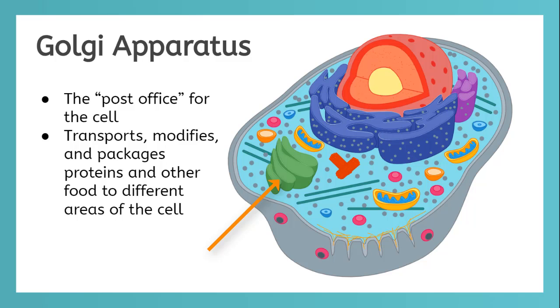The green blob is the Golgi apparatus. It is called the post office of the cell. It modifies, sorts, and packages different materials to leave the cell or to be used within the cell. The Golgi apparatus receives proteins delivered by vesicles from the rough endoplasmic reticulum.